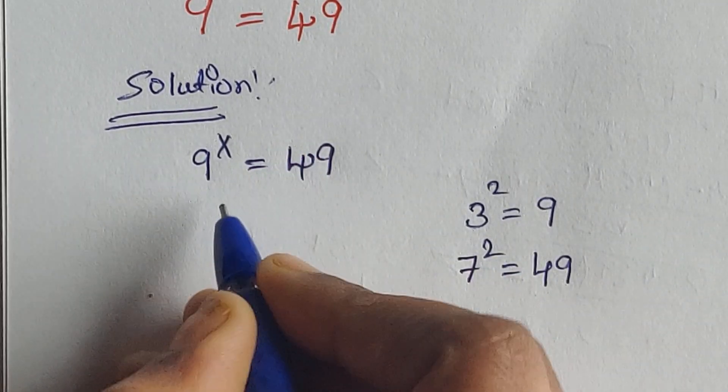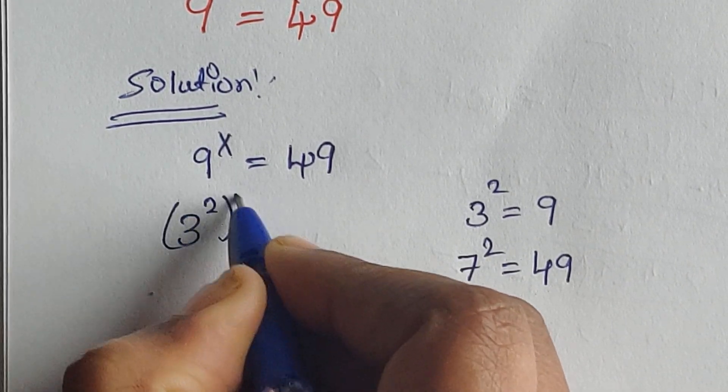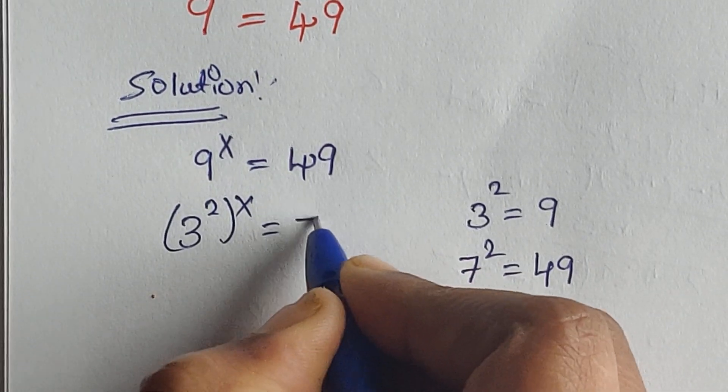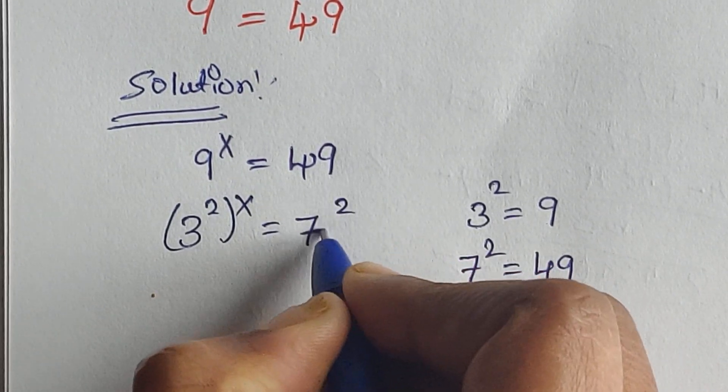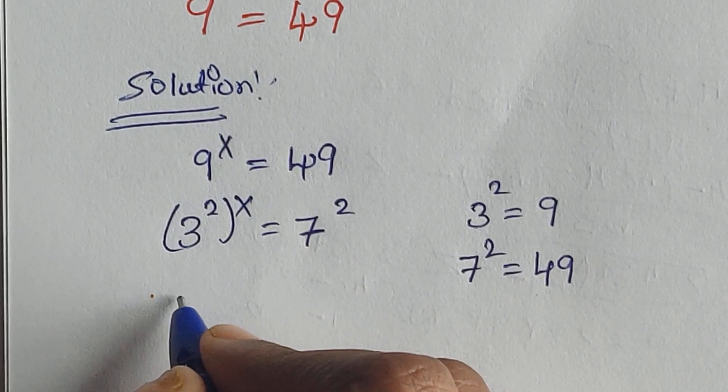So 3 squared to the power of x equals 7 squared. So 2 times x: 3 to the power of 2x equals 7 squared.